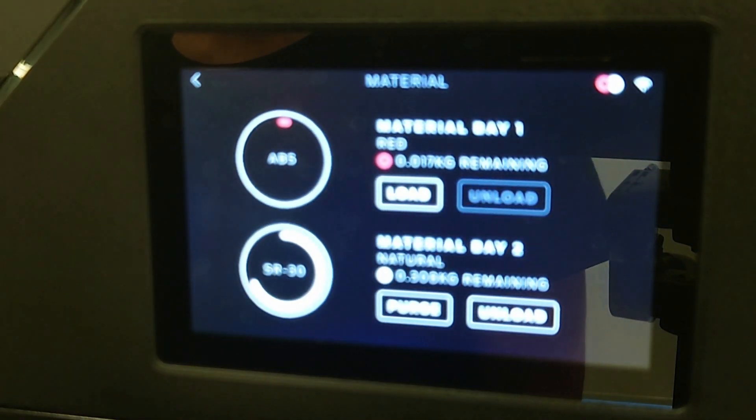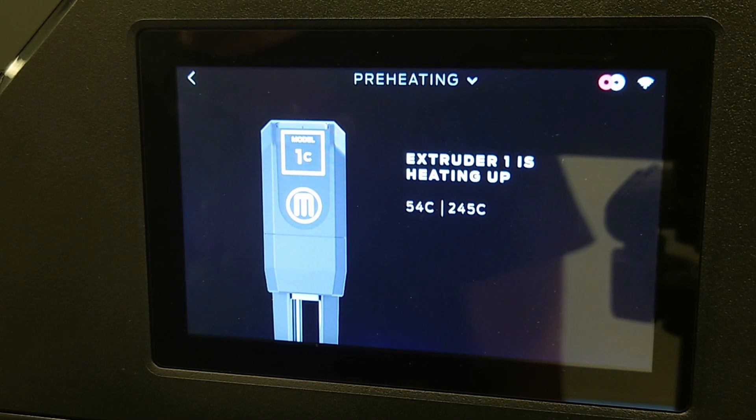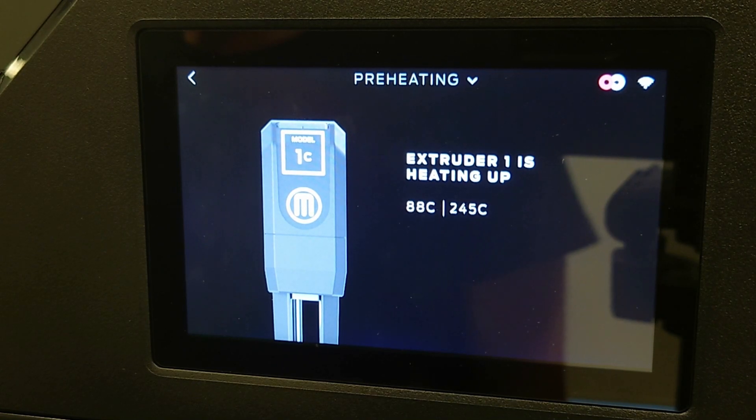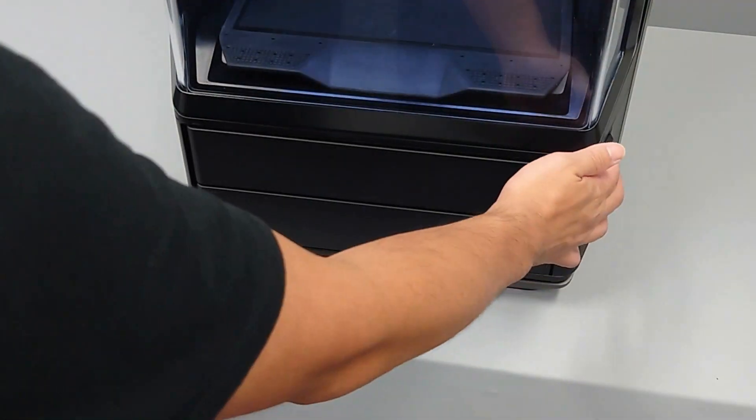Select the load button. After selecting load, the extruder will begin to heat up to the target loading temperature, at which point you can place the new spool in the material bay.